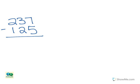Let's take a look at the equation 237 minus 125. Make sure you line up the numbers so that the numbers in the hundreds, tens, and ones place are lined up with each other.